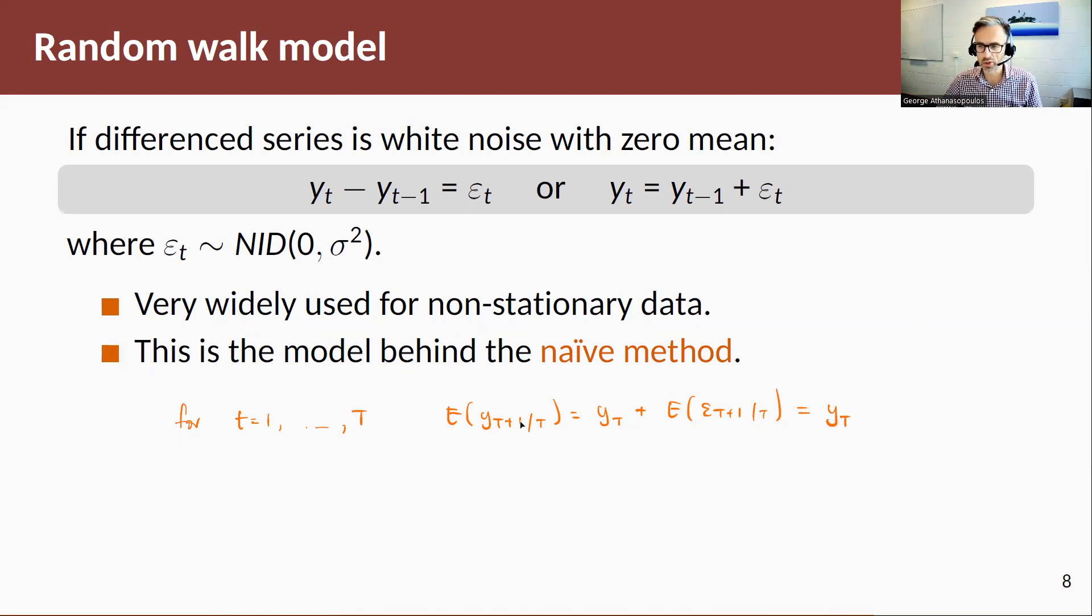Hence, the expected value of my yt plus one conditional on t is equal to the last thing observed. We can roll this forward to yt plus two. There'll be the expected value of yt plus one conditional on t plus expected value of the random error at t plus two, so this is zero. We can substitute in from what we've worked on the previous step. Hence the expected value of two steps ahead is equal to yt, and we can generalize that to h steps ahead. This is the model that underlies the naive method.